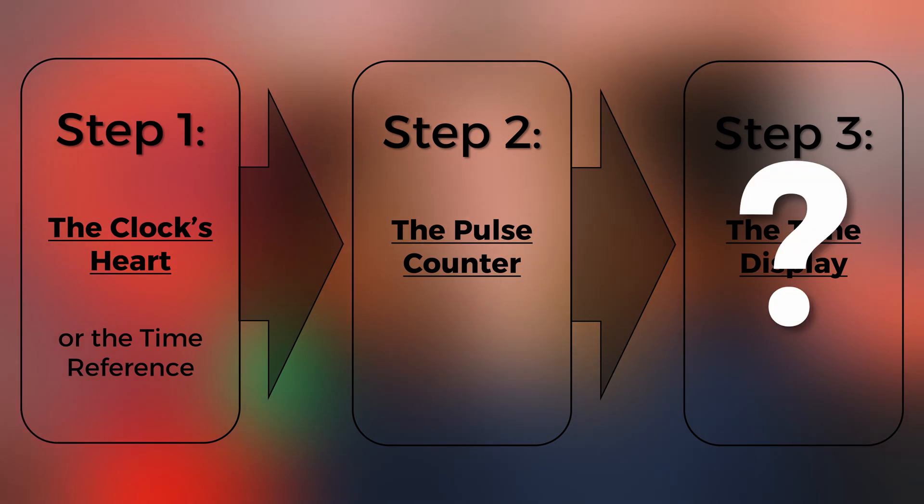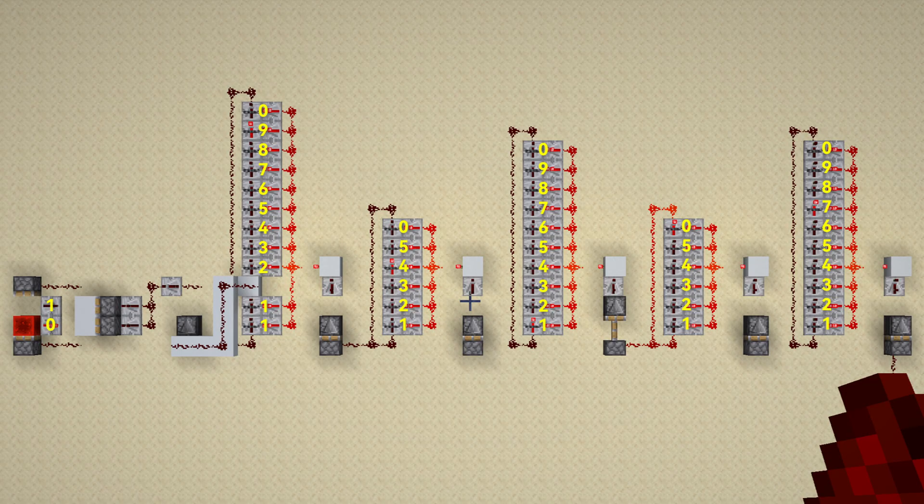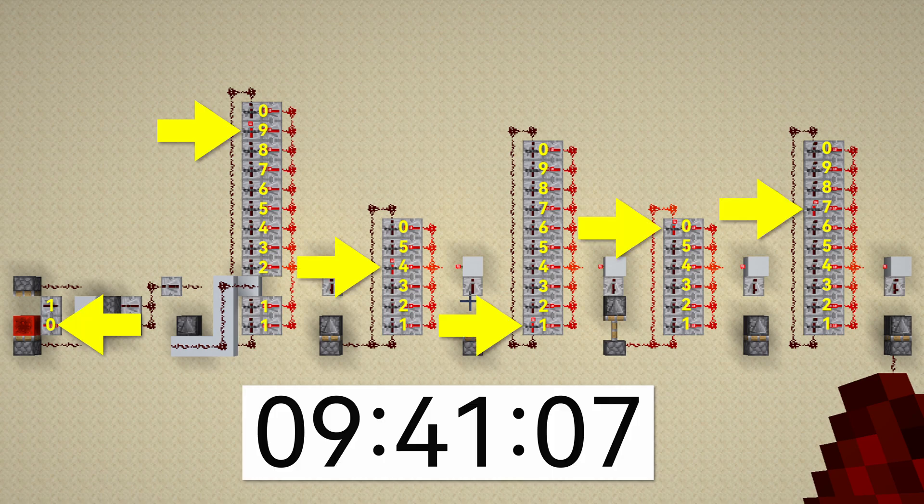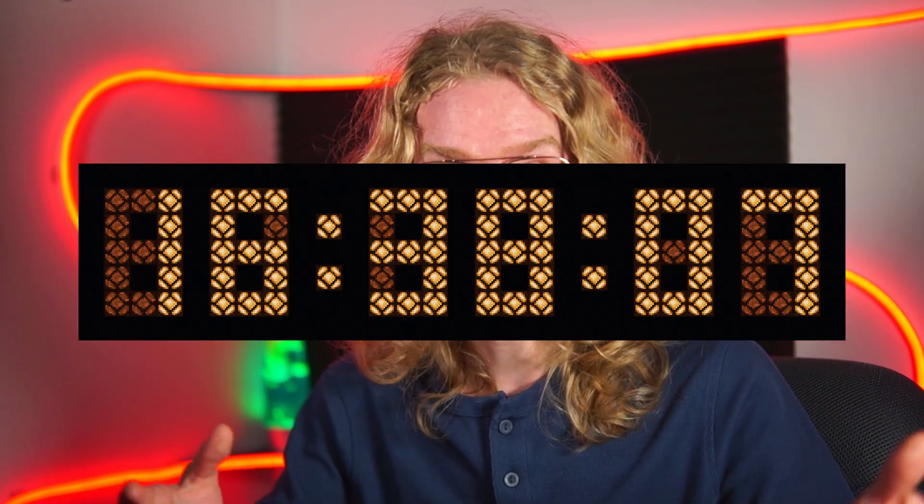And you're going to ask: what about the display? Because we're using redstone and repeaters, we can see when they're lit up or not. I could just put an overlay of numbers over beside the repeaters and you'd be able to read the time just fine, but it's not the most practical or coolest way. As promised, we're going to be building a seven segment display for this clock, but that is for a future video.